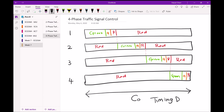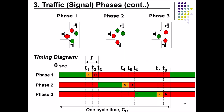That is how to sketch the timing diagram — it is straightforward. For a three-phase system shown in the PowerPoint slide, one cycle is divided into three phases. During phase one's green, phases two and three must be red — you cannot have two phases green simultaneously or there will be collisions and accidents. Only one phase shows green at a time. Only during the all-red period do all phases show red simultaneously.